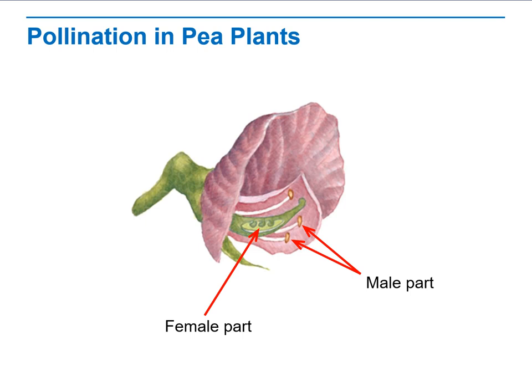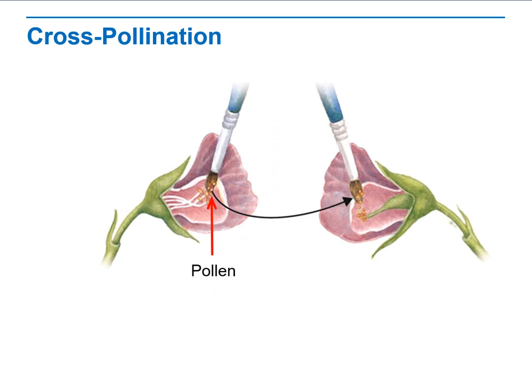When we talk about pea plant pollination, there is cross-pollination and self-pollination. Self-pollination is when the female and male parts are from the same plant. Cross-pollination is when the male parts from one plant fertilize the female parts of a different plant. Each plant has its own male and female parts.